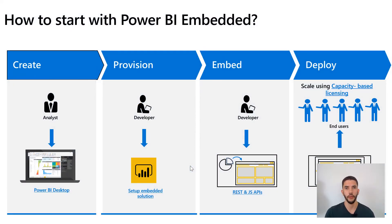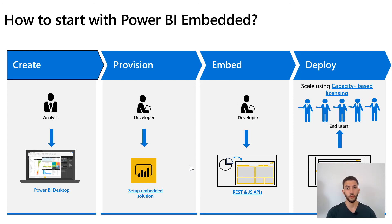To get started with Power BI Embedded: first, create your analytics using Power BI Desktop, which is a free tool. Next, provision your embedded solution by creating an app on Azure with the right permissions. Then develop your application using both REST APIs and JavaScript APIs — the server side handles permission logic (getting reports, getting embed URLs, generating embed tokens), and the JavaScript API handles the actual iframe embedding and all interactions for your end users.